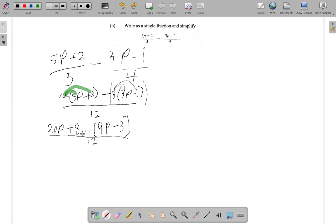Now we'll come to this part. It's going to be 20P plus 8. Remove the bracket, you're going to have 9P give you a negative 9P because it's like multiply by negative 1 when you remove the bracket. Same thing happen with the negative 3, negative by negative give you a positive 3, divided by 12.